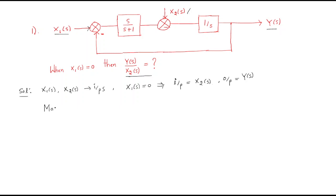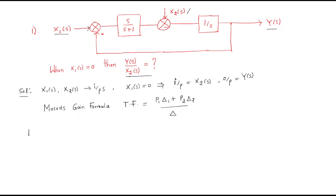We will use Mason's gain formula. Mason's gain formula gives the transfer function as: (P1·Δ1 + P2·Δ2 + ...) / Δ. To analyze this, first we look at how many loops and how many forward paths we have.